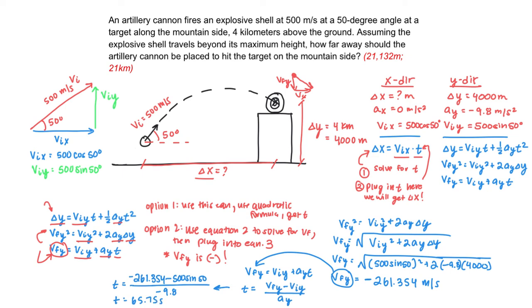So remember, now I'm almost done. My original plan, I'll show it right here. My original plan was to solve for T and then come back and plug it into this equation. So I'll go ahead and do that. I'm going to show that up here in the corner. So delta X equals VIX times T. So now we know that delta X will be that 500 cosine 50 times 65.75 seconds. And then we should get our delta X is equal to 21,132 meters away.